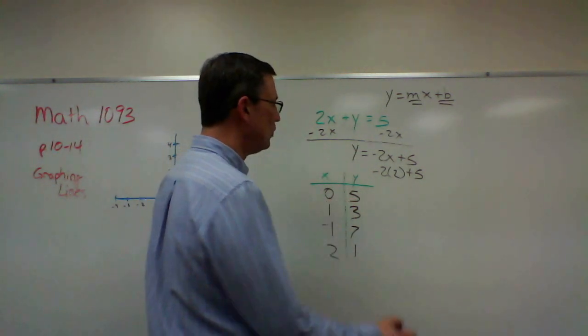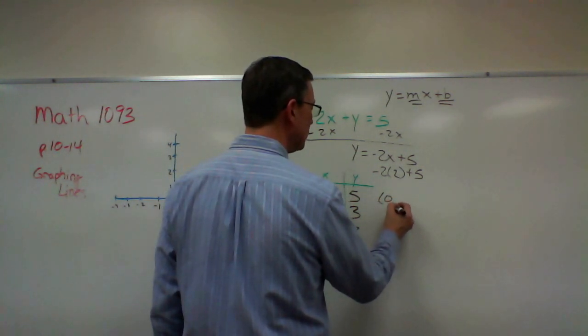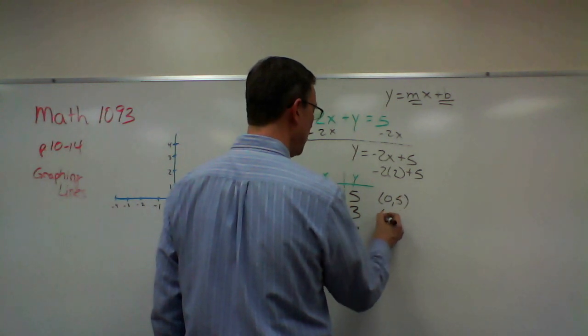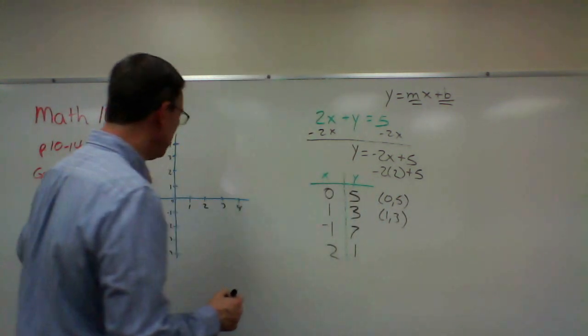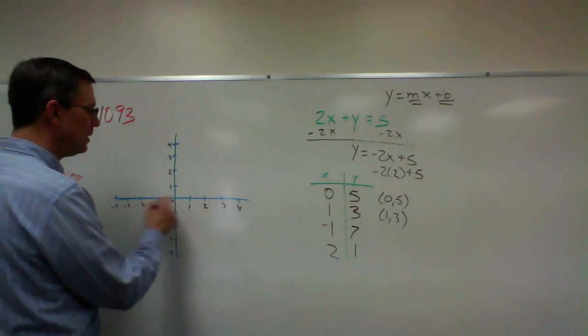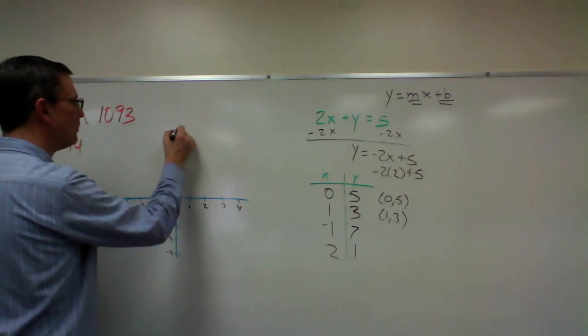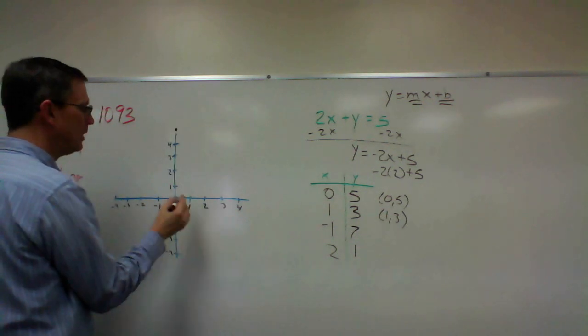Now all of these represent points, like 0, 5, then 1, 3, etc. So if I come over here to the graph and find these, again we crawl first and then we stand up. So 0, 5 would be here.